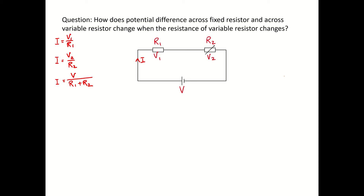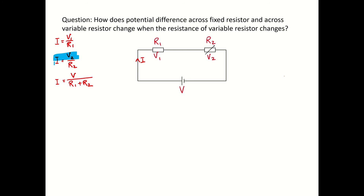We know that when R2 changes, V2 is going to change. When we want to study how one variable affects the whole equation, we don't want two variables to change together, so we just stick to one variable. The variable will be R2.